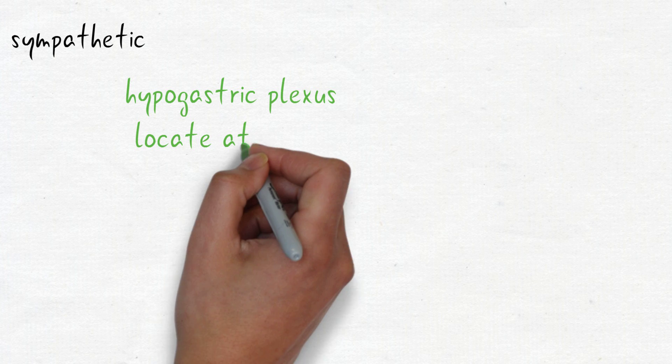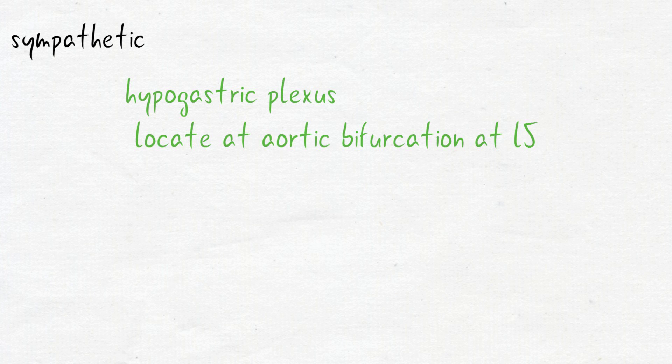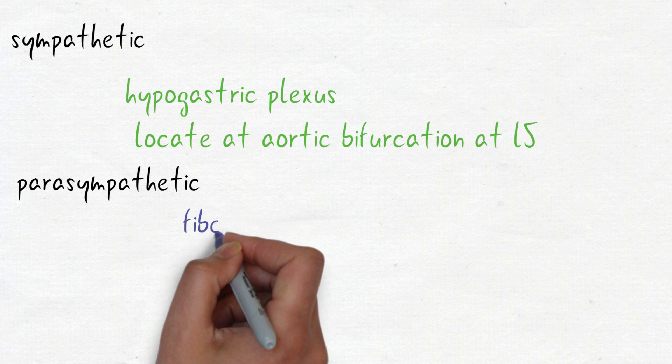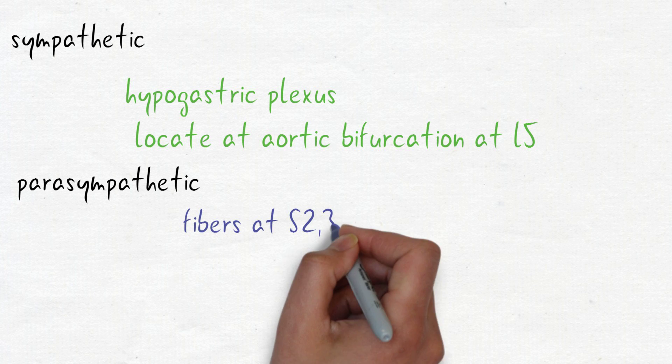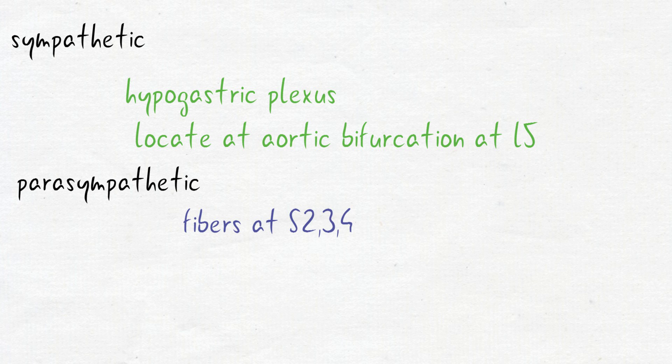This is the paired nervous system. Hypogastric plexus located at the aortic bifurcation at L5, injuring can cause absence of dry orgasm. Parasympathetic system S2, S3 and S4 are the motor fibers supplied to the detrusor. Gases and stools can be distinguished by these nerves. Loss of the nerve leads to loss of sensation.